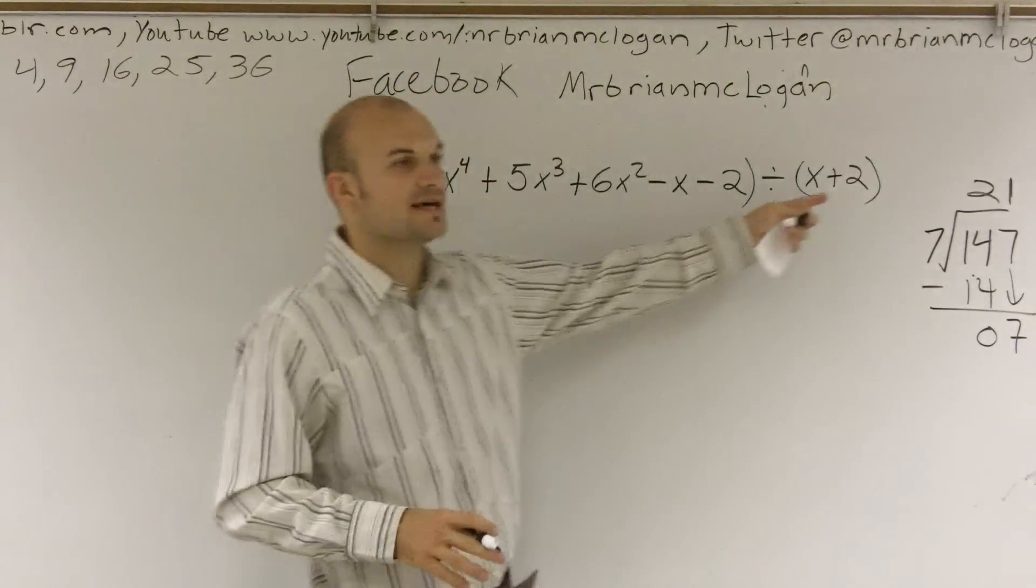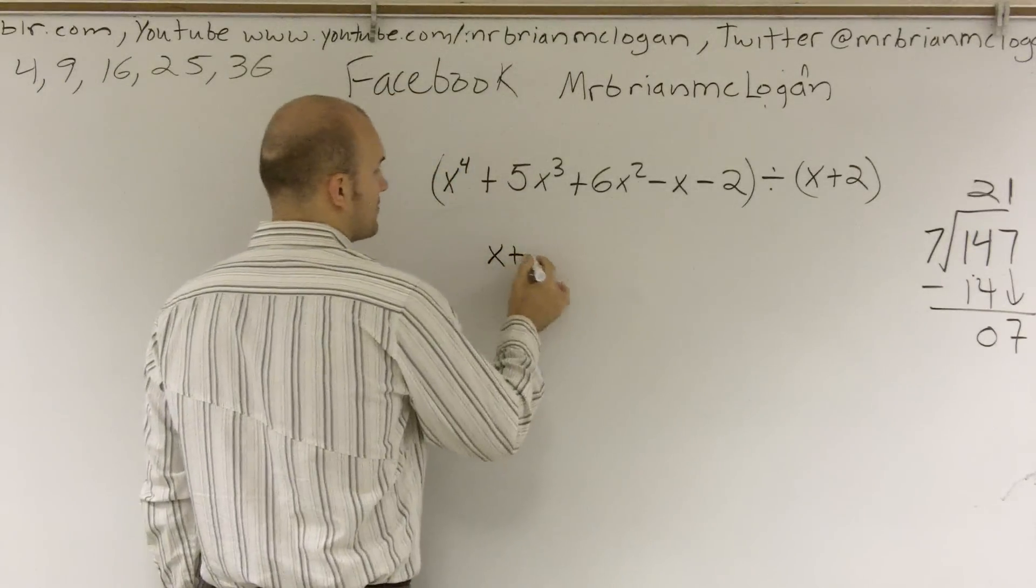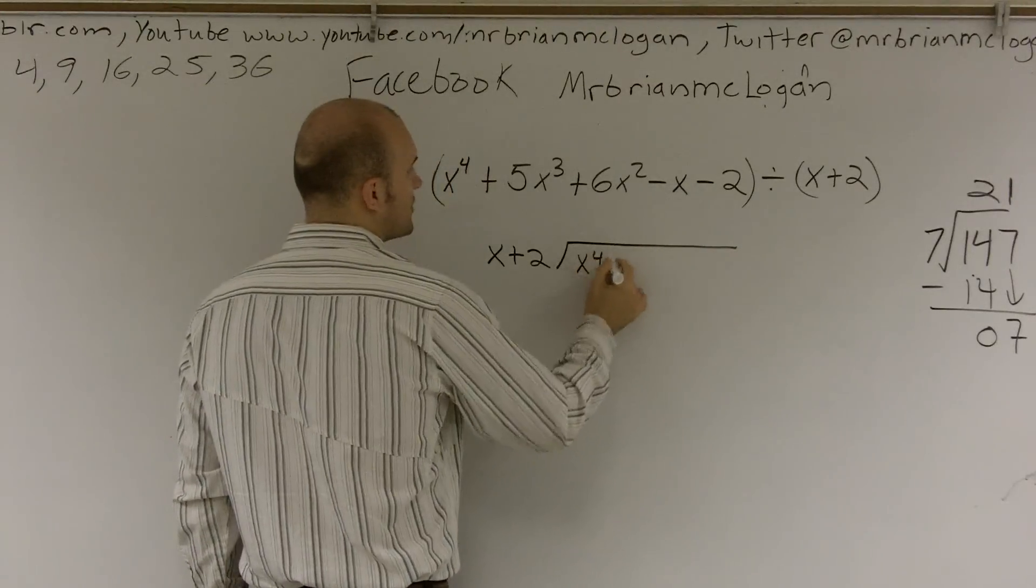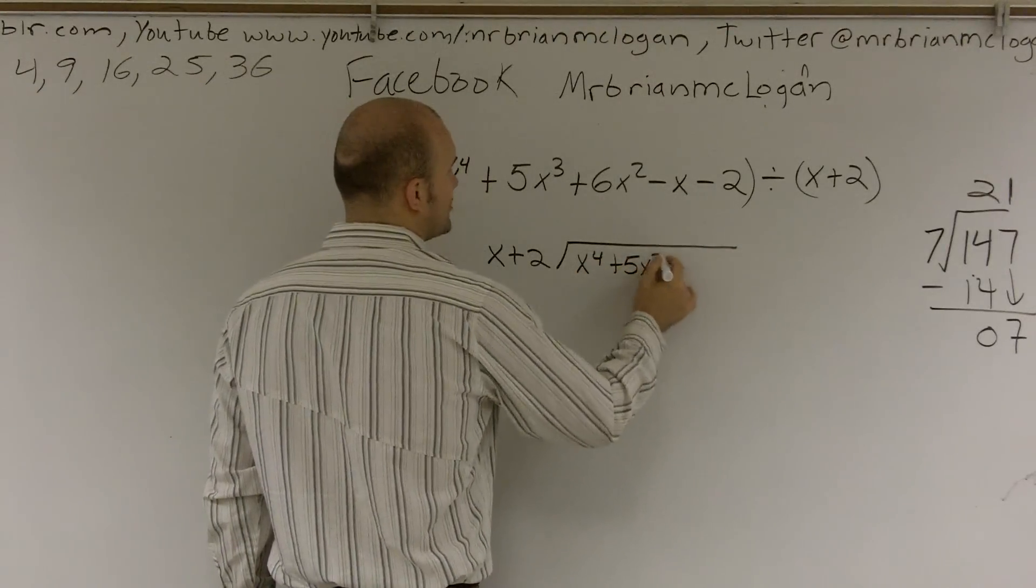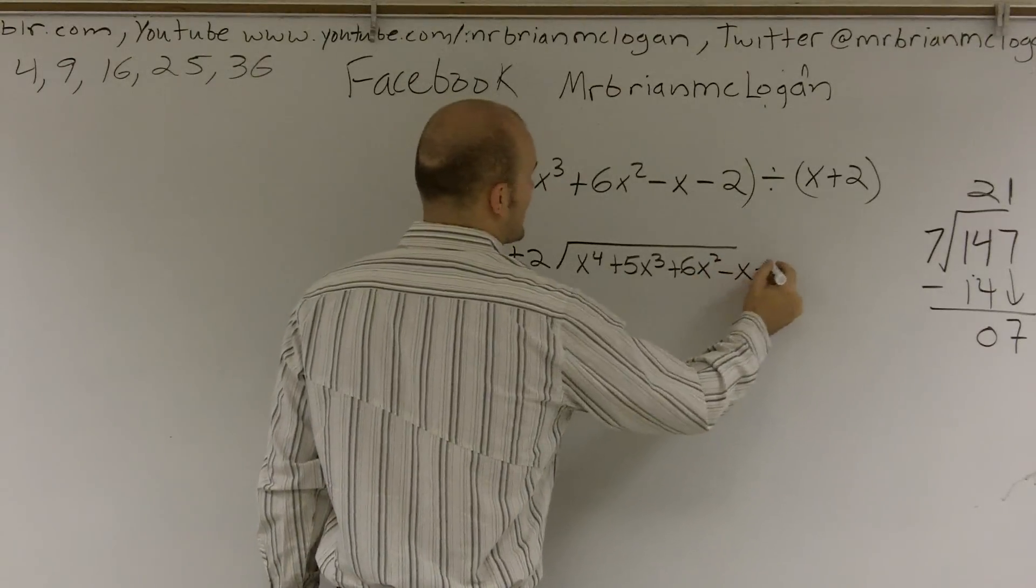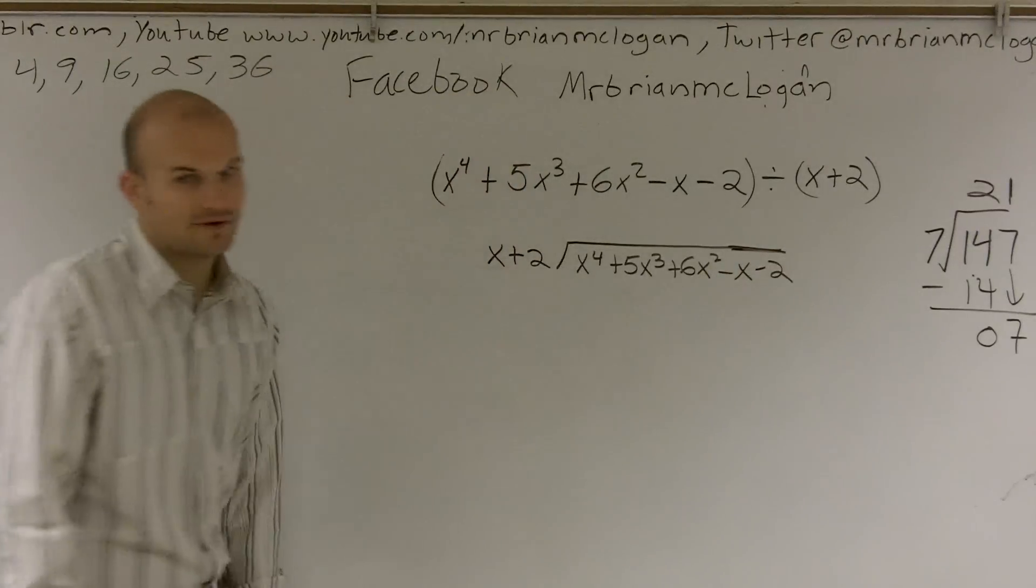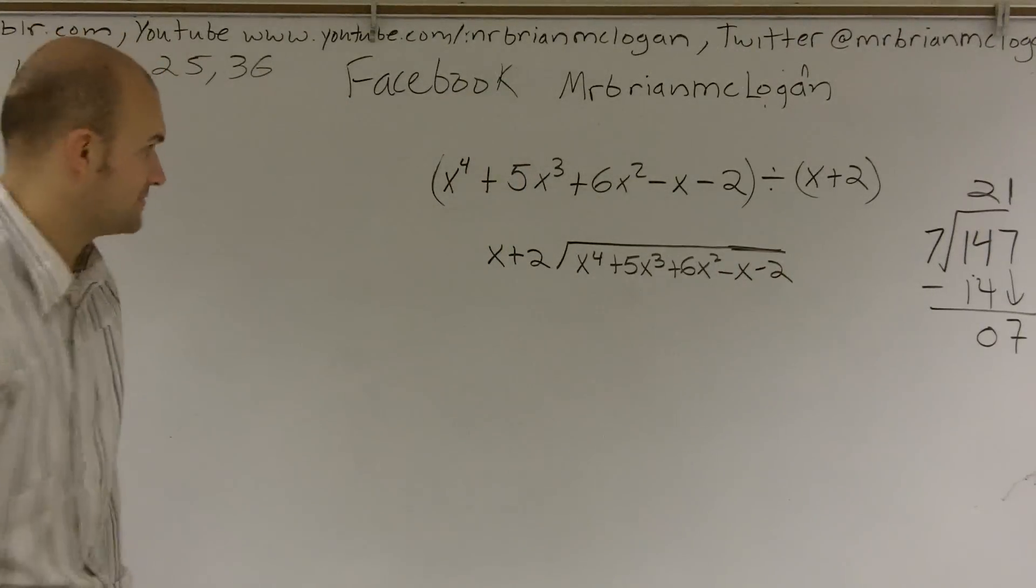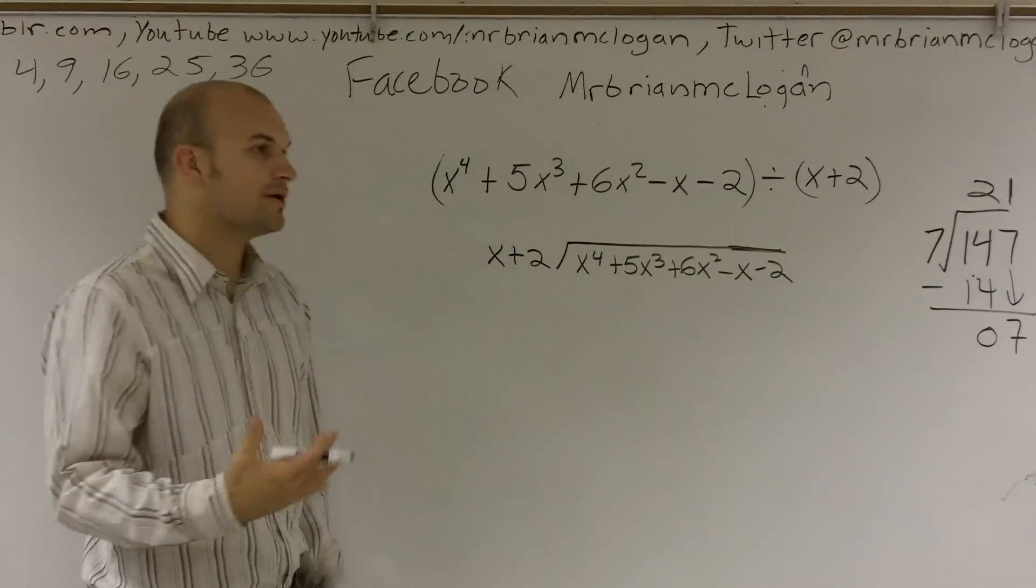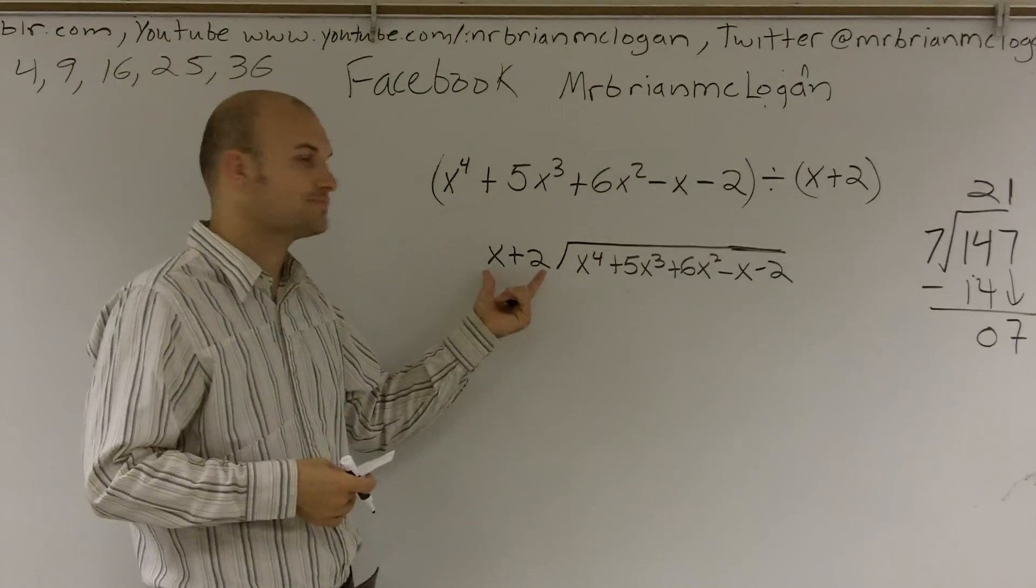So the first thing, we're going to set our divisor and dividend the exact same way. So I'm going to say x plus 2 divided by x to the 4th plus 5x cubed plus 6x squared minus x minus 2. So we've got all this stuff we need to divide in, right? It's a lot of stuff. Well, remember, if you look at this, we have a binomial, right?